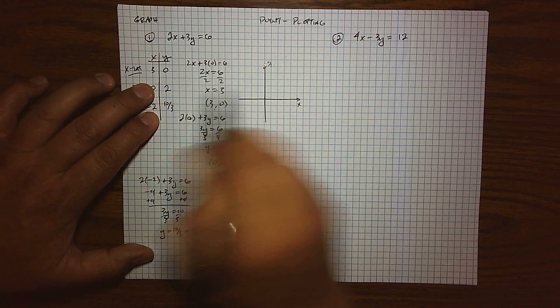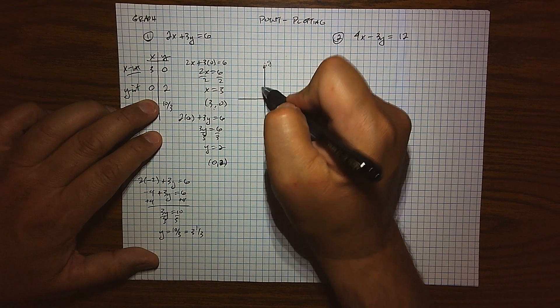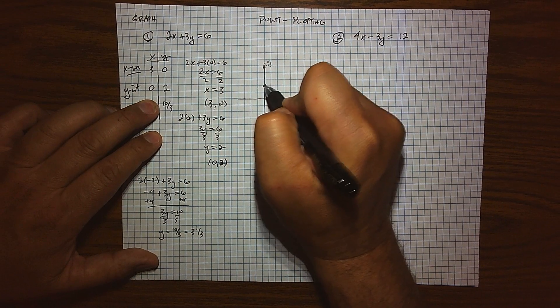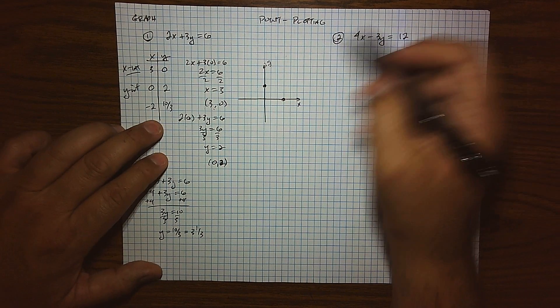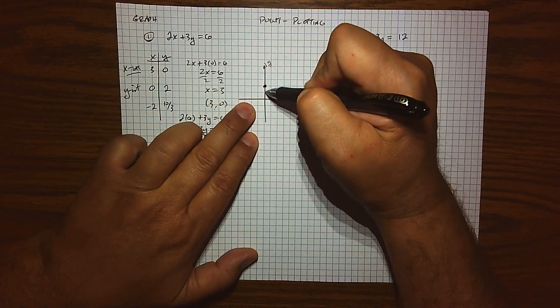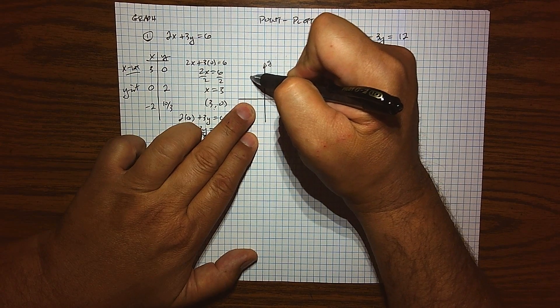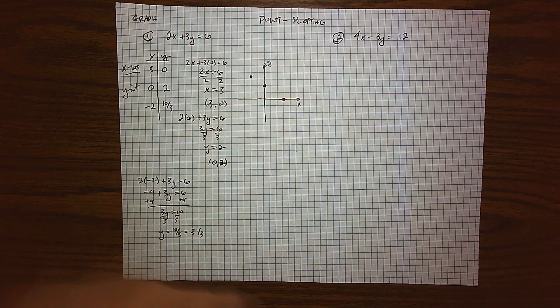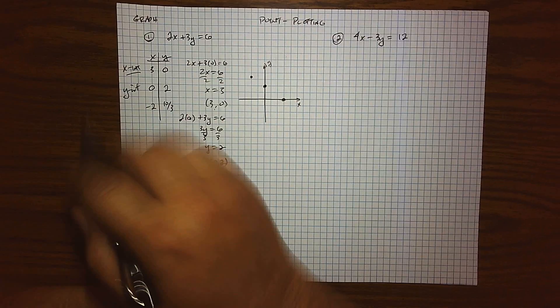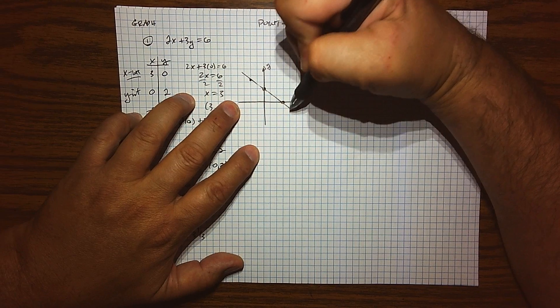My x-intercept's occurring at 3, 0. My y-intercept's occurring at 0, 2. And then my other data point, when x is negative 2, the corresponding y-value is 3 and about a third, which takes us about right there. And I'm pretty confident that my work is right because the points do line up real nicely.